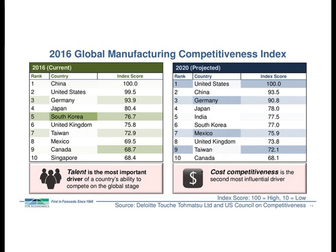After talent comes cost competitiveness — we don't win there, since we pay workers well and maintain strong social safety nets. But that's only the second most influential driver. By 2020, the United States is poised to knock China off the top spot and retake the number one manufacturing trophy by an even larger margin. The data says we're still a global manufacturing powerhouse, and in the long run we have the demographics and the people to become the single most competitive manufacturer in the world.